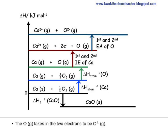The oxygen gas takes in the two electrons to become O²⁻ gas. This involves the first and second electron affinity of oxygen. The first electron affinity is exothermic, but the second EA might not be. Hence, in this diagram, we have assumed the first and second EA to be endothermic.